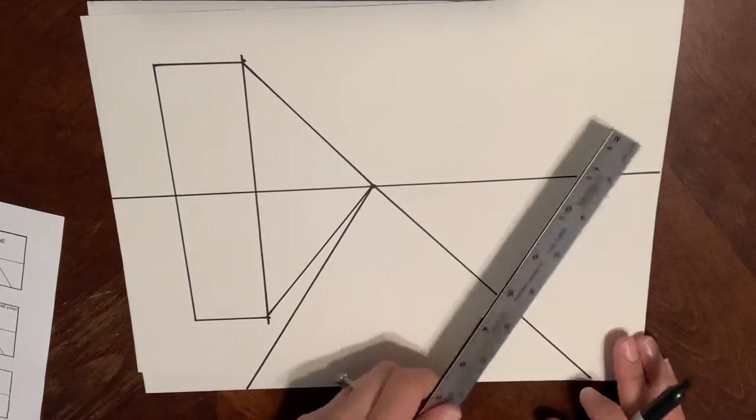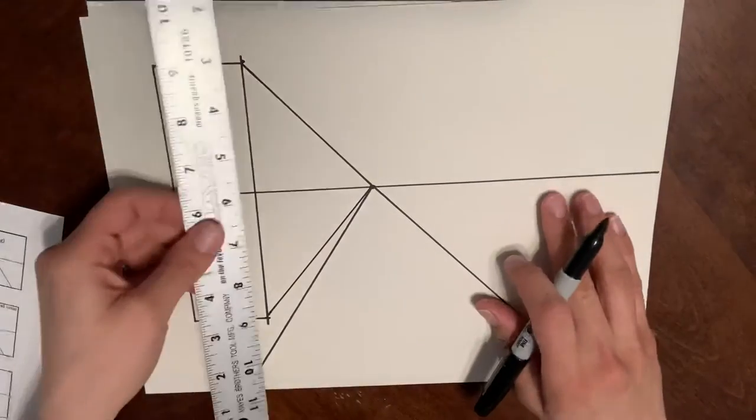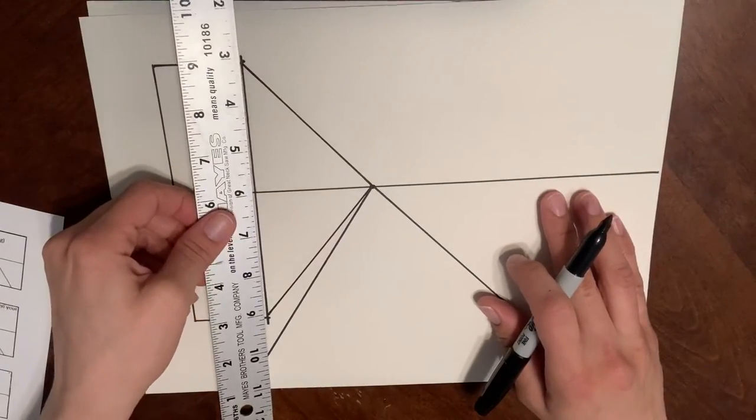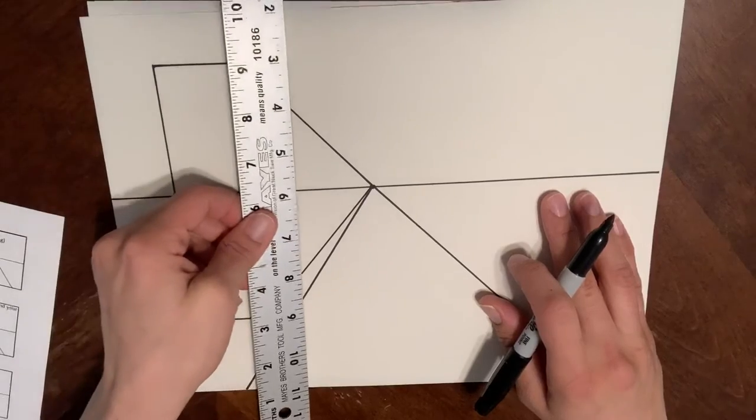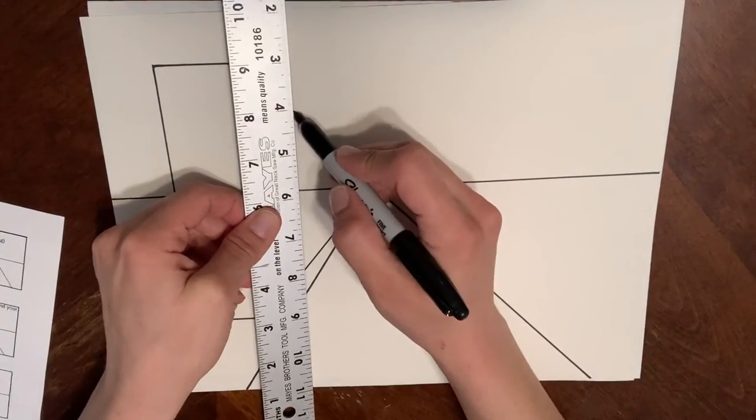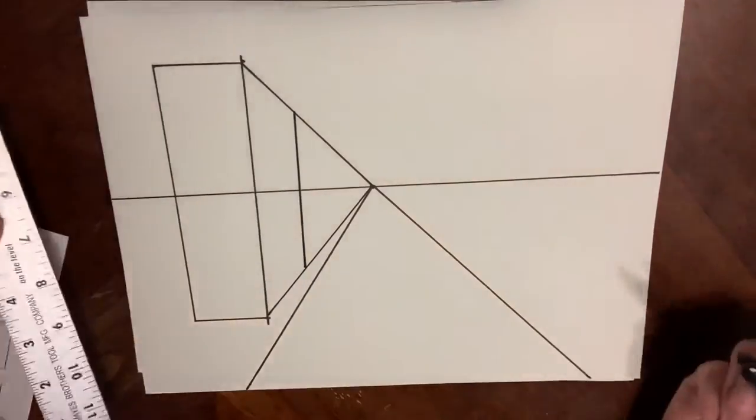Right now my building's going on forever. I need to make sure that I line up my ruler with the edge of the building and end the building with a parallel line here that's straight up and down.